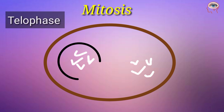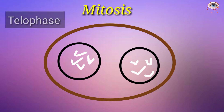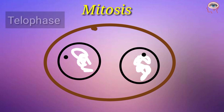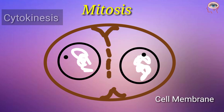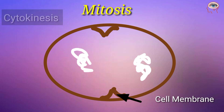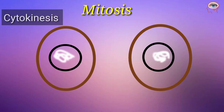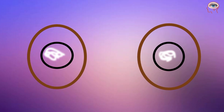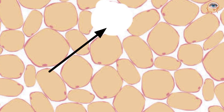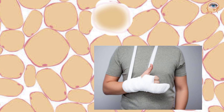The next step is called telophase, during which the nuclear envelope reforms and chromosomes return back to chromatin. The next step is called cytokinesis, during which the cell membrane invaginates and the cell divides into two daughter cells. In this way, the process of mitosis helps in the formation of new cells in your body.